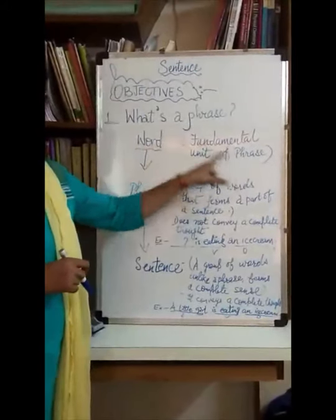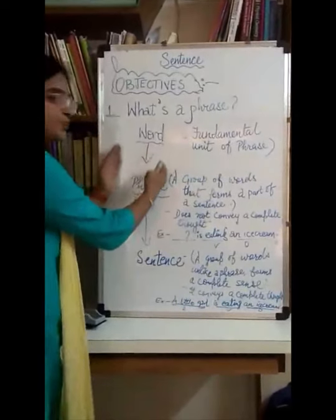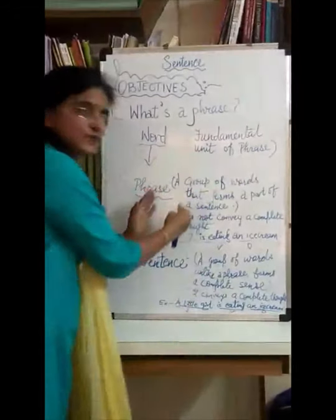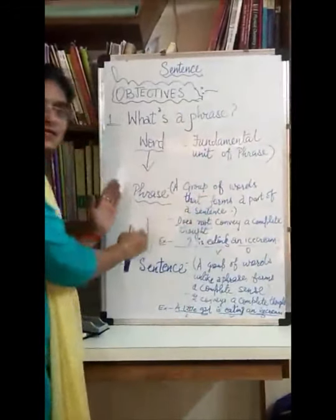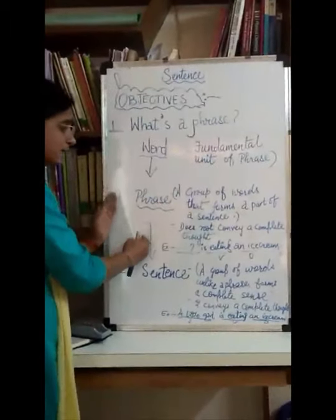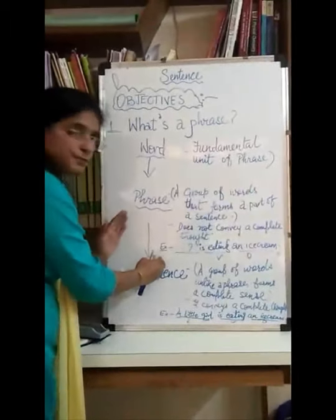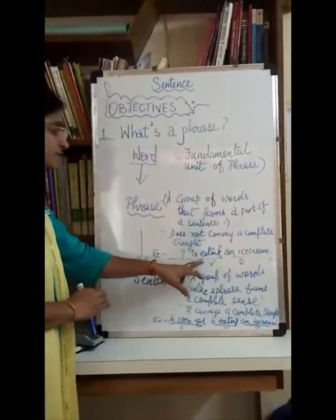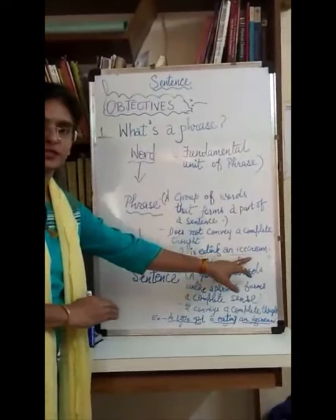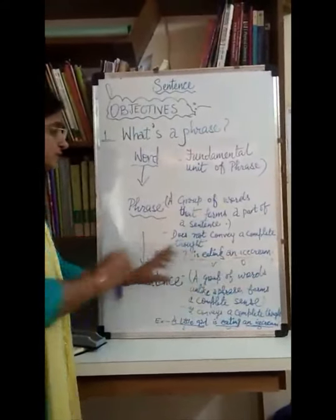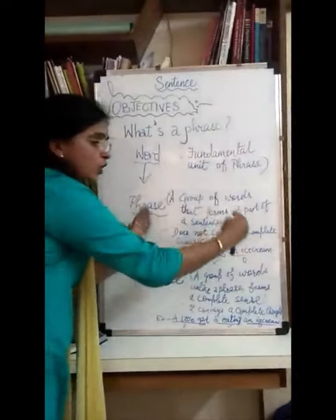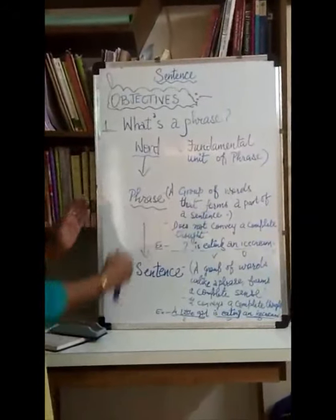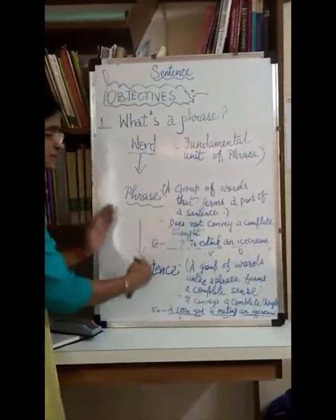What is a phrase? When we have a group of words but that group of words forms only a part of a sentence and does not deliver a complete sense, that is called a phrase. For example, 'dash is eating an ice cream' — we are given a verb and an object but no subject, so this delivers only half a thought, which is not a complete sense.